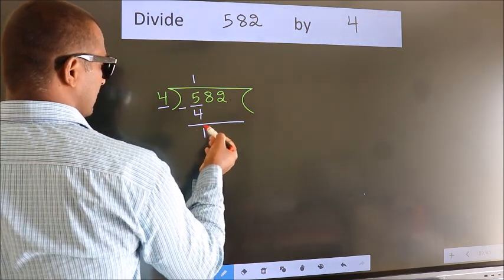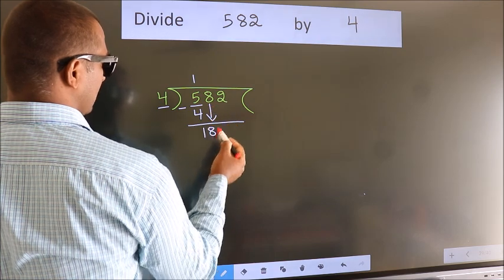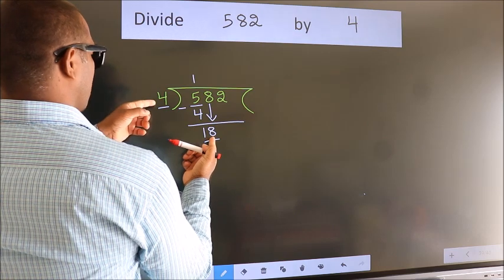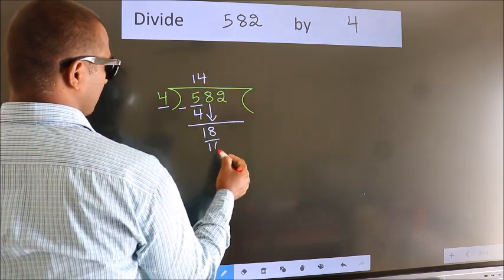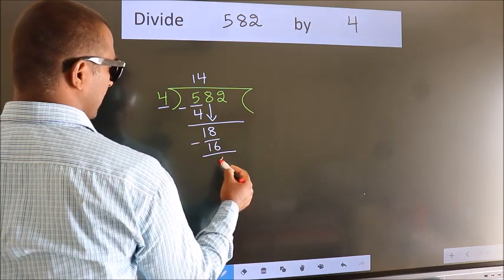After this, bring down the beside number. 8 down, so 18. A number close to 18 in the 4 table is 4 4s 16. Now, we subtract. We get 2.